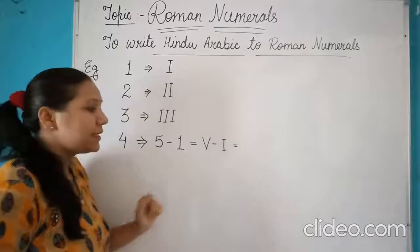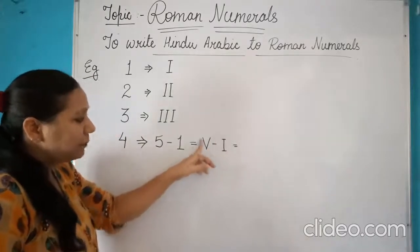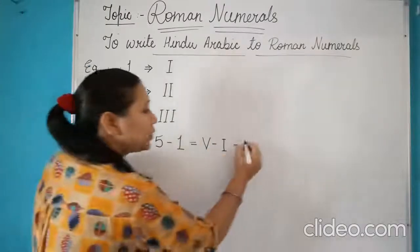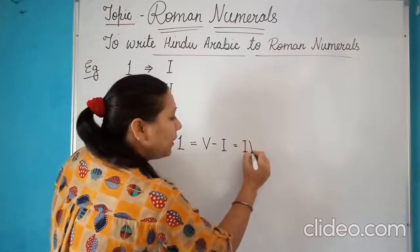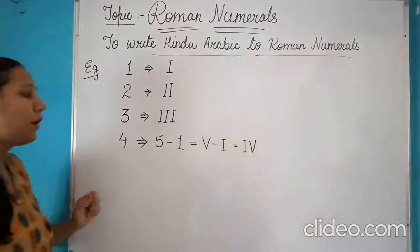So if I have to write V minus I, the rule of subtraction says that I will be preceding to the V. So we will write 4 as IV. This is our symbol for 4.